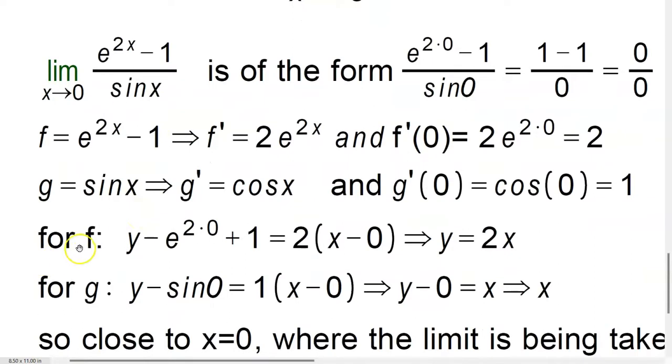So what we are going to do is now for f, we're going to construct a tangent line. In other words, we are going to linearize the function close to where x equals 0. So that's y minus e to the 0 plus 1, so it becomes a plus here, and then 2 times x minus 0. So that's going to give you y equals 2x. This is the linearized version of the function, the tangent line representation. And remember, that's valid around the point of expansion, close to x equals 0.